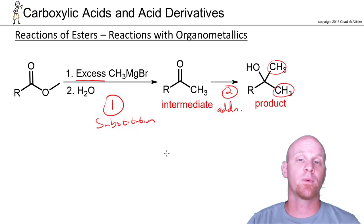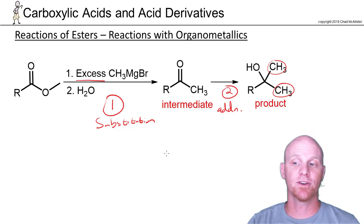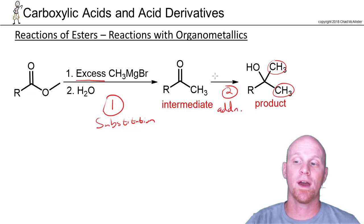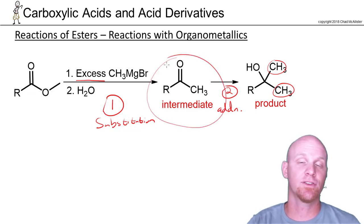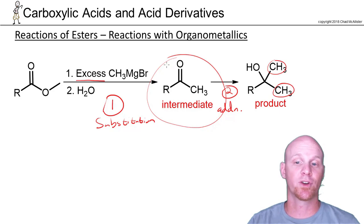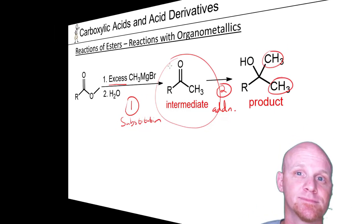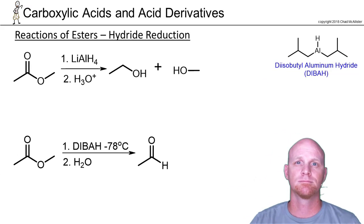Unlike acid chlorides and anhydrides, esters will not react with lithium dialkylcuprates at any good yield, so we don't have a way to actually isolate the ketone. There's no great way to synthesize a ketone with a Grignard and an ester.